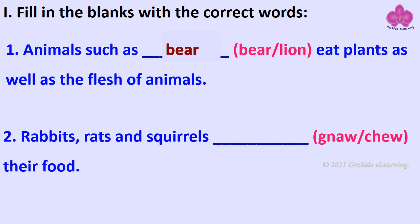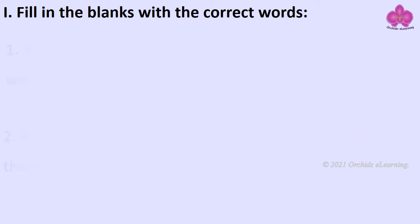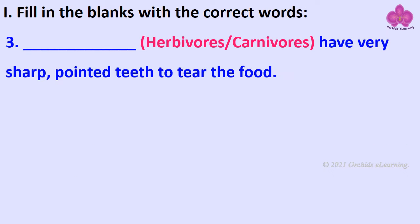Rabbits, rats and squirrels _____ their food. Answer: Gnaw. _____ have very sharp pointed teeth to tear the food. Answer: Carnivores.